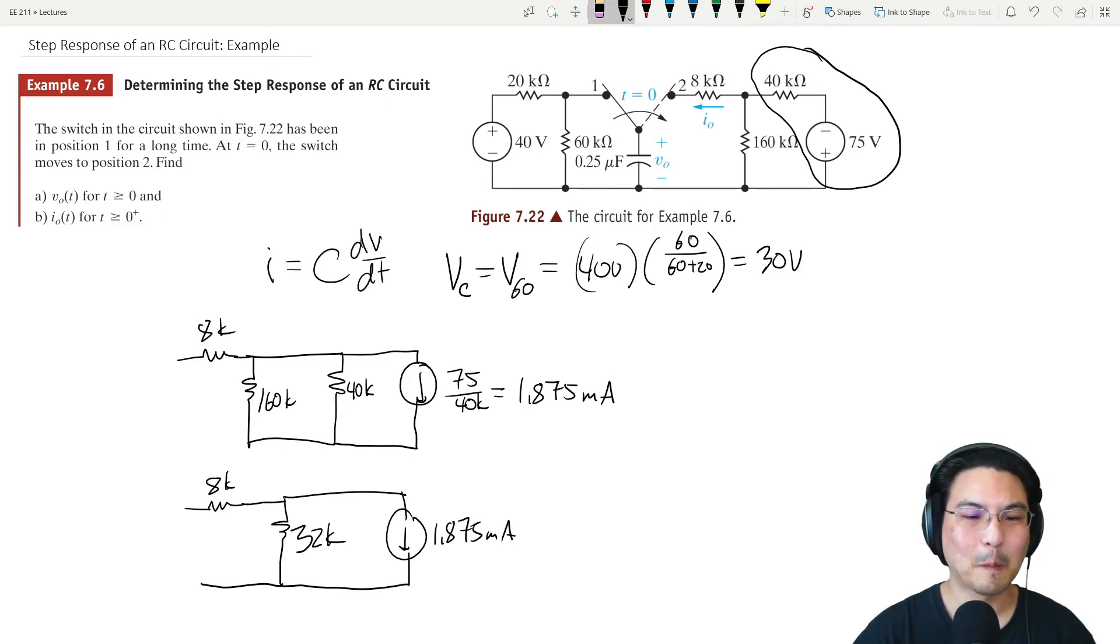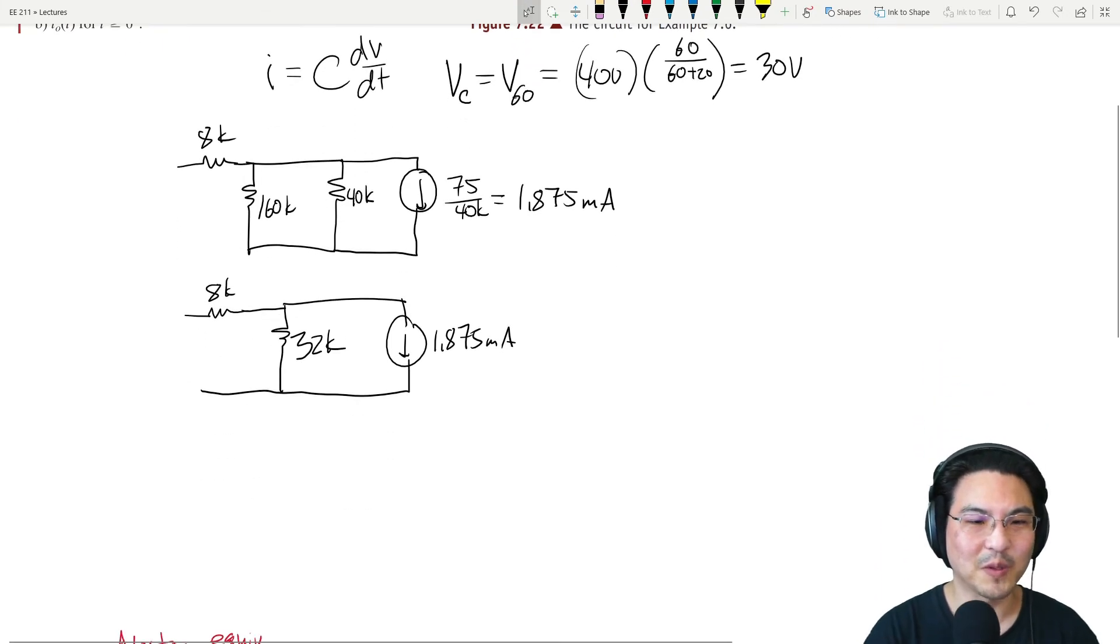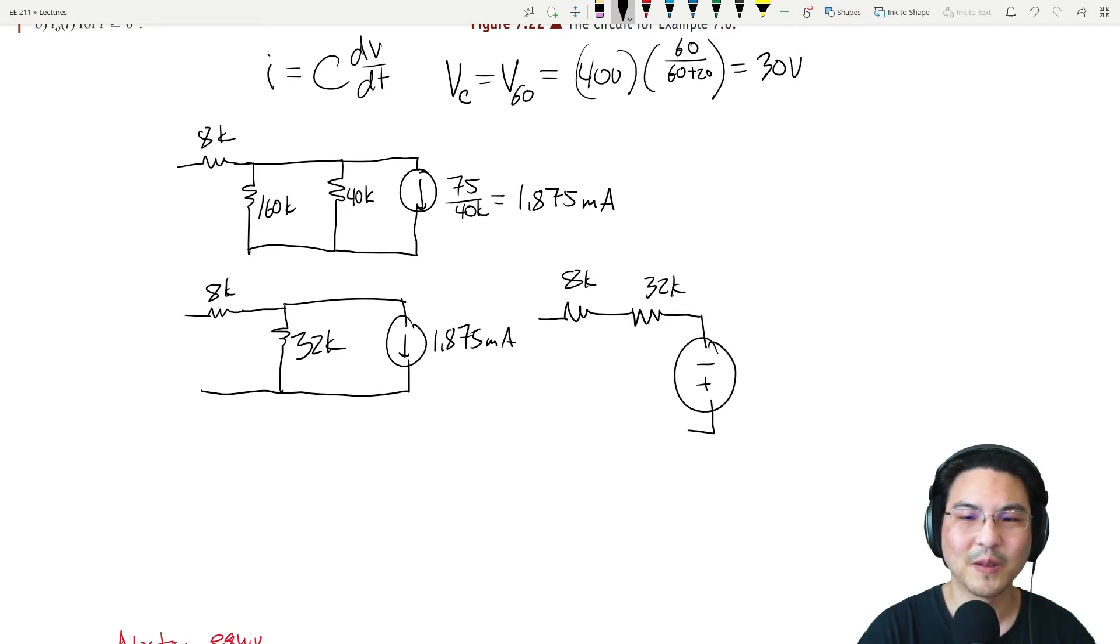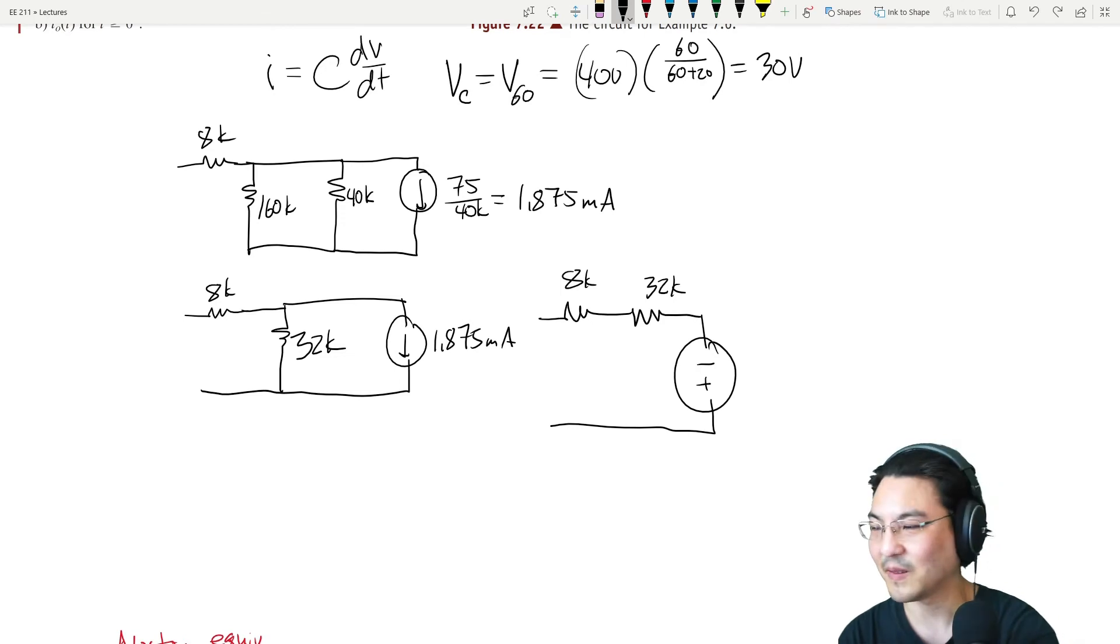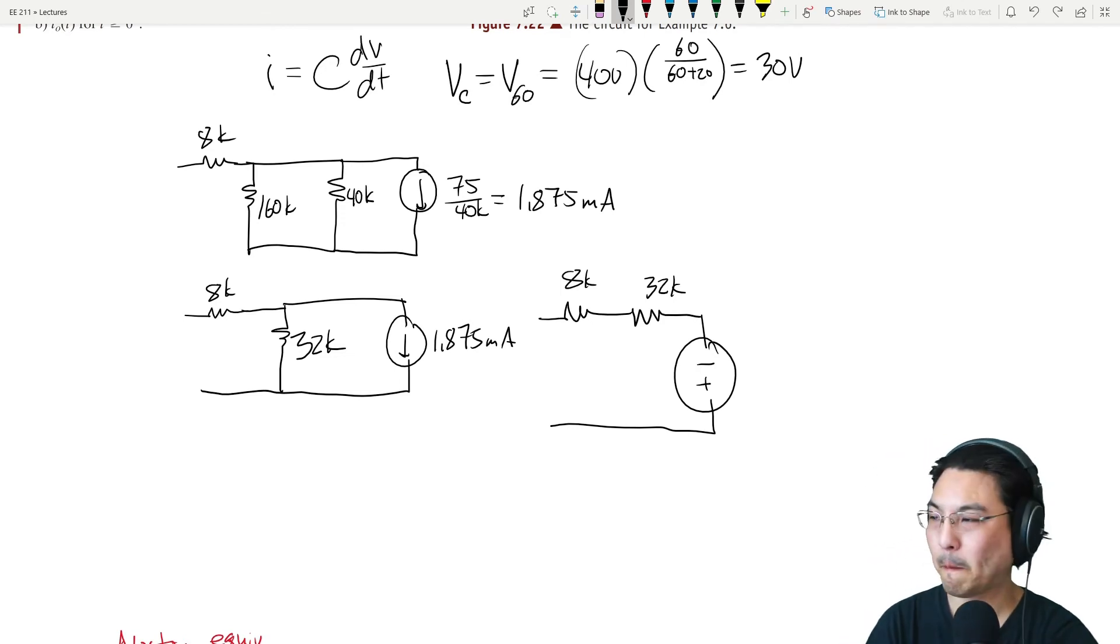Right now it looks like this. We can do one more source transformation right here. We can turn that into series, so 32k goes over here and this is going to be a voltage source which is IR. Let me punch that in the calculator.